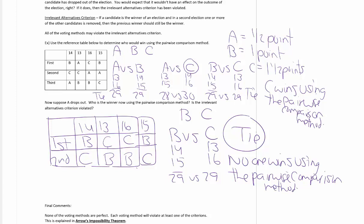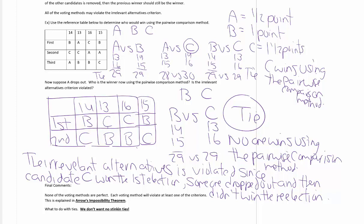We know C won. Candidate A, a candidate that didn't have much to do with anything, has dropped. But C did not end up winning the reelection. Is the irrelevant alternatives criterion violated? The answer to that is yes. The irrelevant alternatives criterion is violated since candidate C won the first election. Someone dropped out and somehow did not win the reelection. They didn't lose it, but they didn't win it either. So it's still been violated.